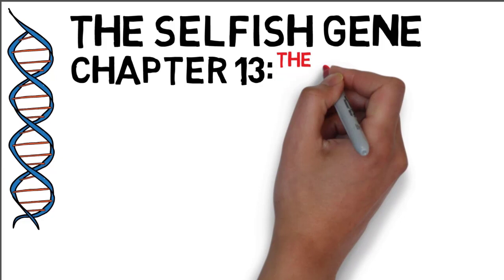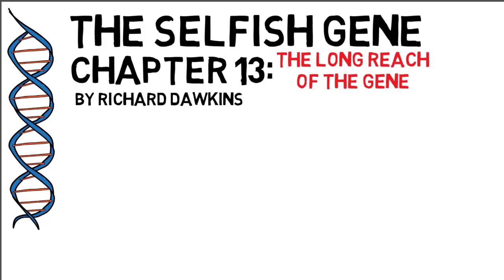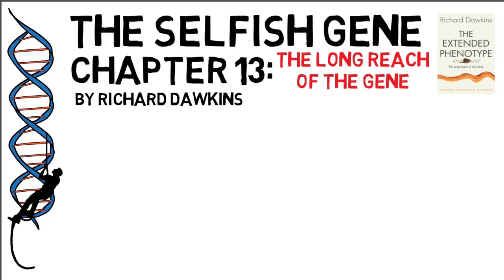The Selfish Gene Chapter 13: The Long Reach of the Gene by Richard Dawkins. Dawkins admits that his selfish gene theory encapsulates a tension between the gene and the individual body, which is further explained in his book The Extended Phenotype.